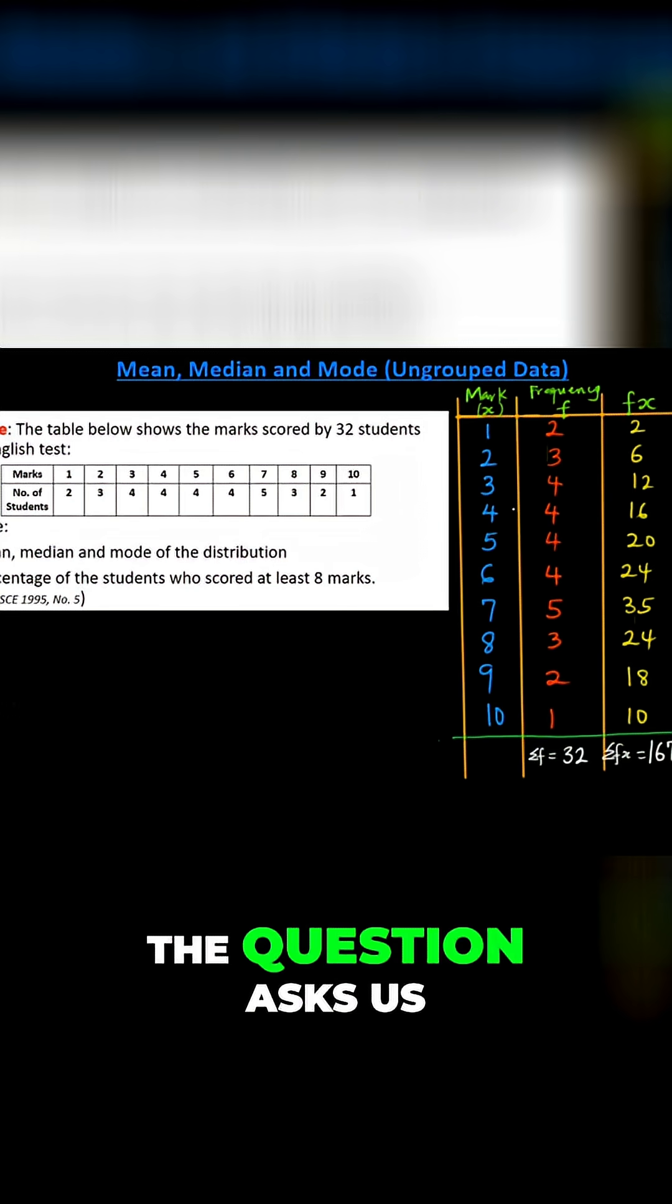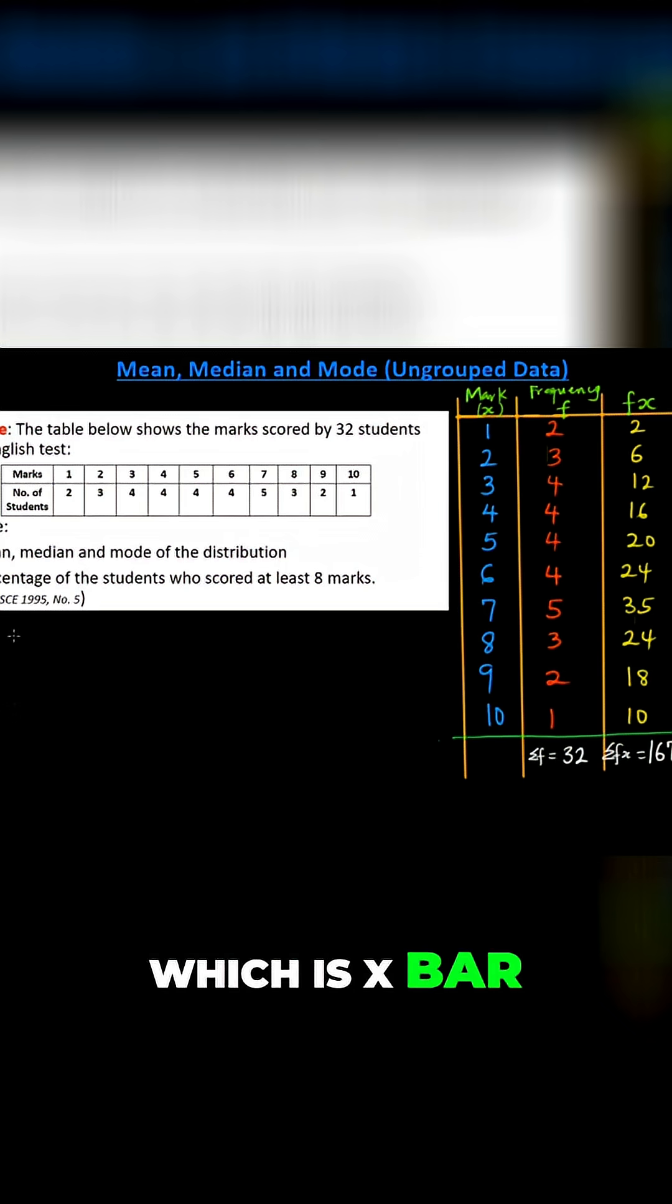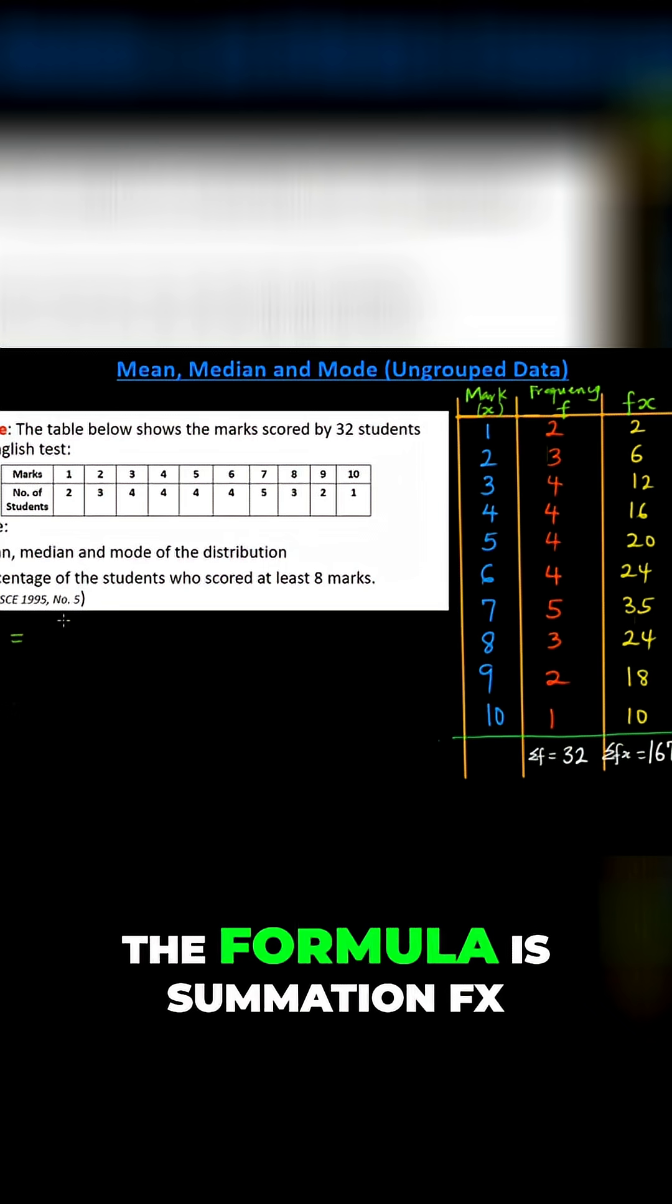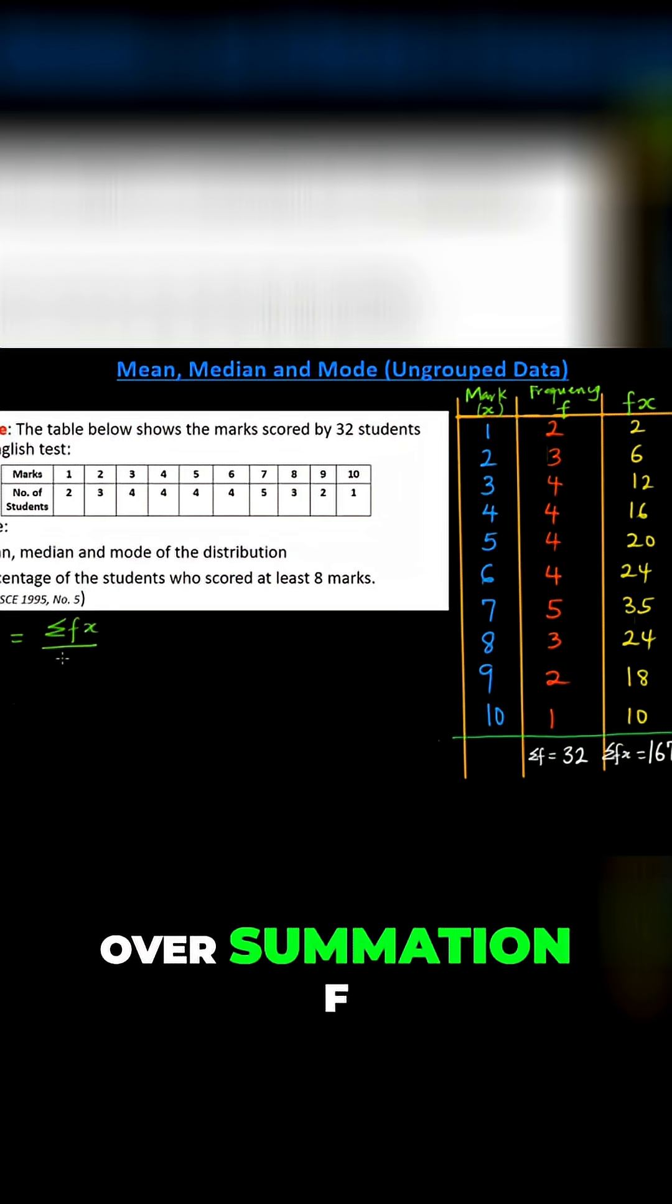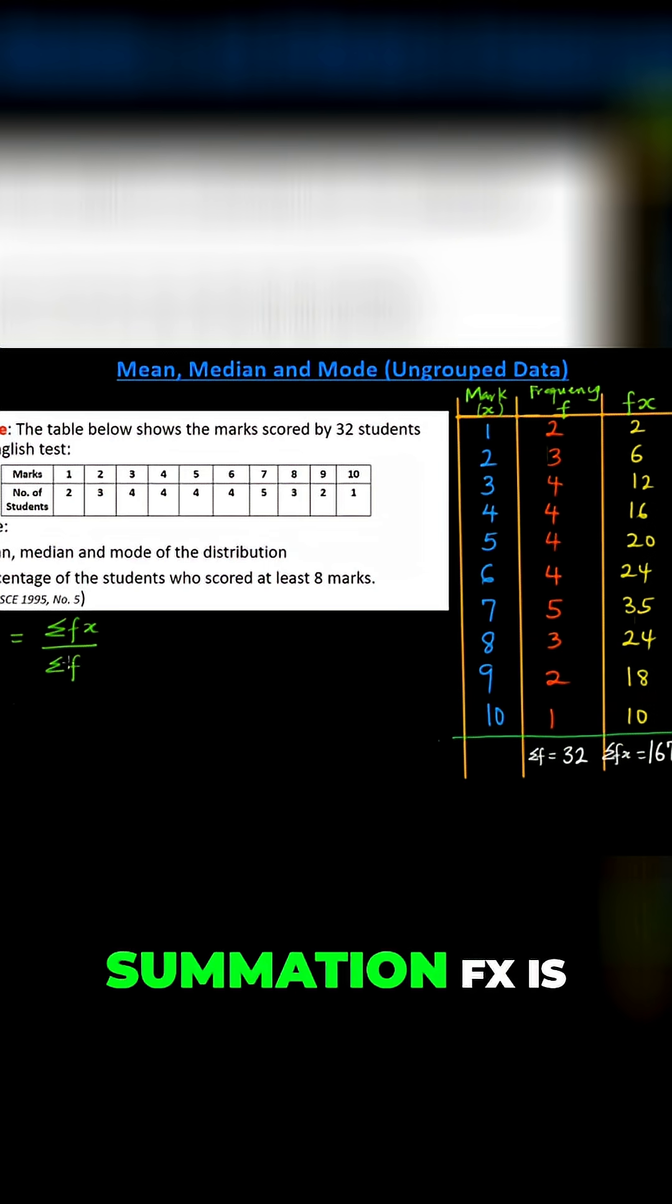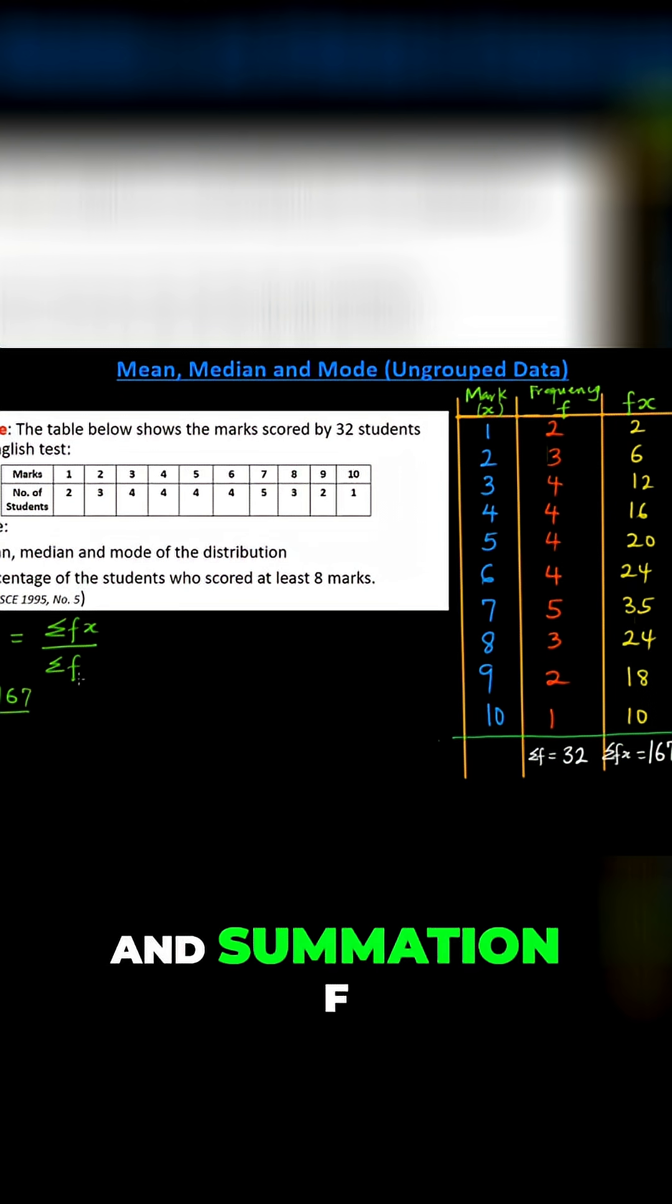Going forward, the question asks us to find the mean, which is X̄ (X bar). The formula is summation fx over summation f. So we see our summation fx is 167, and summation f